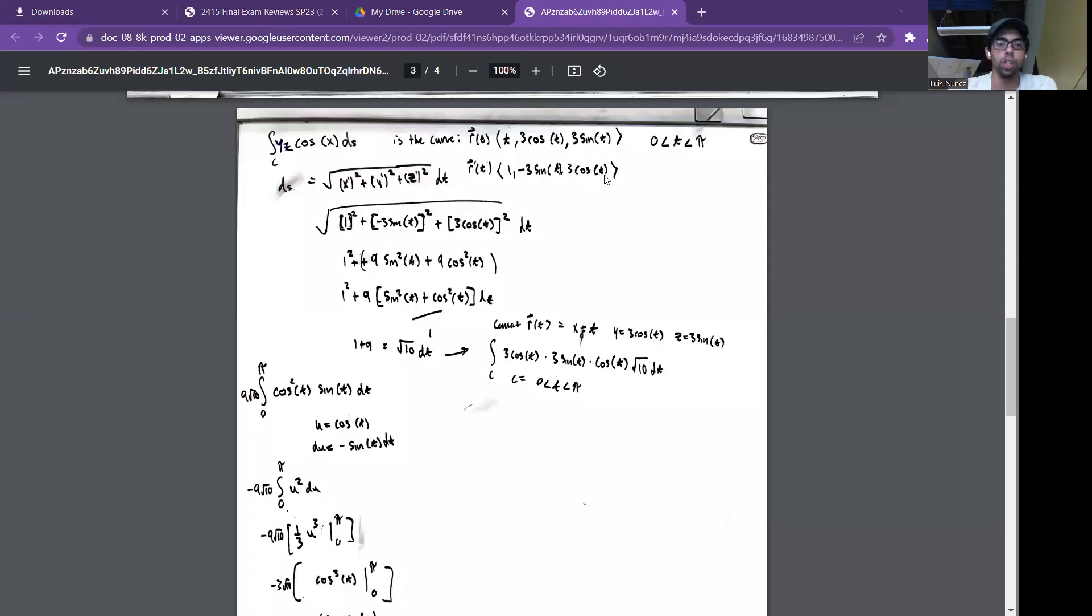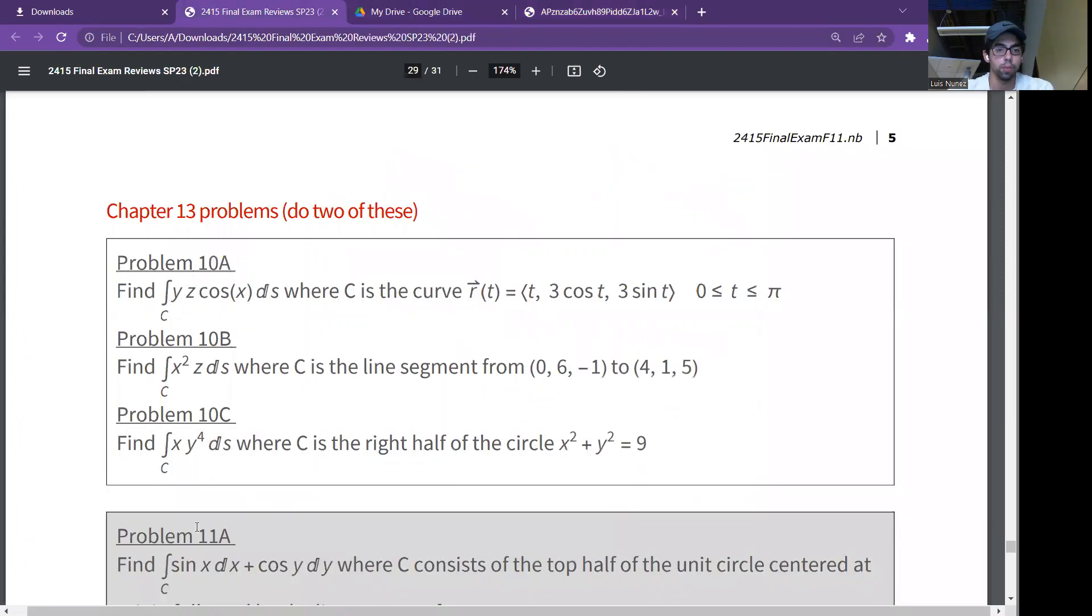Hello Professor, this is problem number 10A. Find the integral over C of Y Z cos(x) ds, where C is the curve with vector equation r(t) = ⟨t, 3 cos t, 3 sin t⟩, with bounds 0 ≤ t ≤ π.